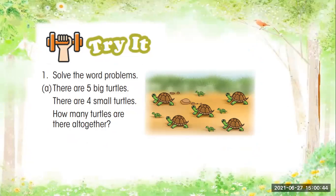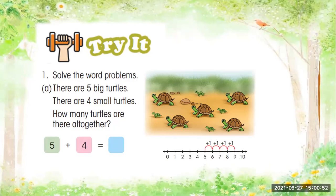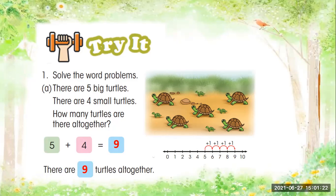Now step number two, we will write the addition sentence: five plus four is equals to blank. We will start counting from number five and count forward four times. Five plus one is six, six plus one is seven, seven plus one is eight, eight plus one is nine. So five plus four is equals to nine. There are nine turtles all together.